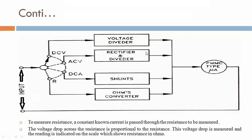So with the help of this block diagram of the analog multimeter, we are able to measure DC voltage, AC voltage, current, and resistance. These are the different steps discussed in this lecture. Thank you very much.